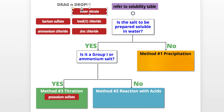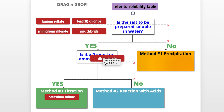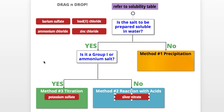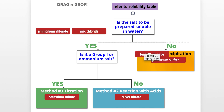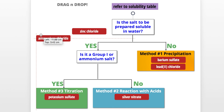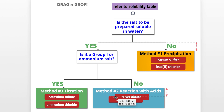For silver nitrate: soluble? Yes, because all nitrates are soluble. Is silver in group 1? No, nor is it an ammonium salt, so we use the reaction with acids method. For barium sulfate: all sulfates are soluble except barium, calcium, and lead, so barium sulfate is insoluble — we use precipitation. Lead(II) chloride is also insoluble, so straight to precipitation. Ammonium chloride is soluble and is an ammonium salt, so we use titration. Zinc chloride is soluble but not a group 1 salt, so we use reaction with acids.